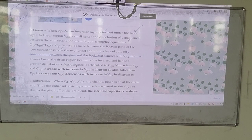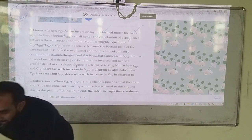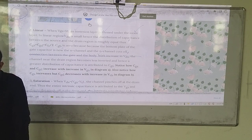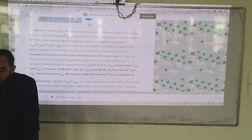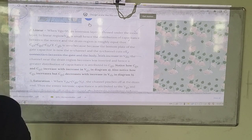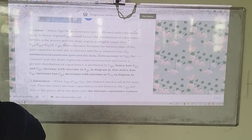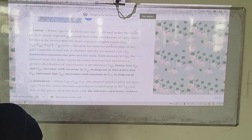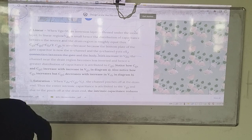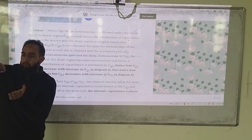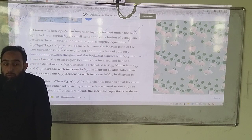Now when we talk about the linear region, VGS is greater than VT. If there is a threshold voltage, it will be inversion. Inversion is just the oxide. But here VGS is small, so it will be equal to source and drain region. Therefore it is equal to C0 by 2. And CGB is 0 because the bottom plate of the gate capacitor is now the end channel, so CGB does not exist.